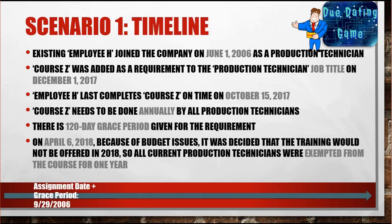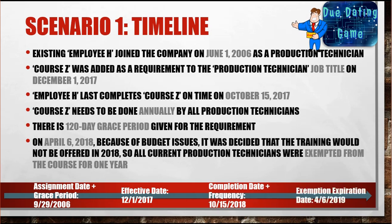The assignment date, plus the grace period, came out to 9-29-2006. The effective date was 12-1-2017. They did attend a course, and their completion date plus the 12-month frequency comes to 10-15-2018. But with the exemption expiration date set to 4-6-2019, that is the calculated due date.